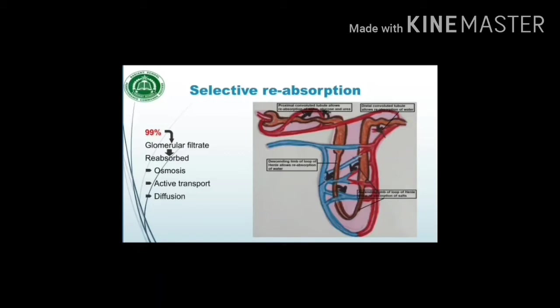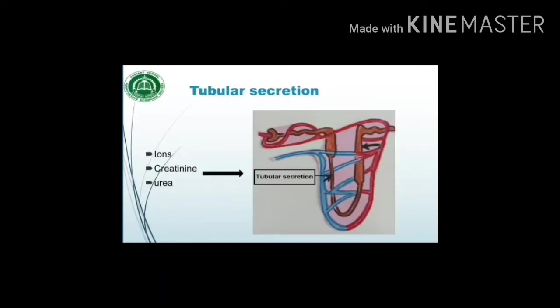The last step is tubular secretion. Most ions, creatinine, and urea are secreted from the blood into the filtrate in the renal tubule. The arrows in the diagram show the secretion of these substances from the blood into the renal tubule. This is done to maintain blood at a normal pH of 7.35 to 7.45.